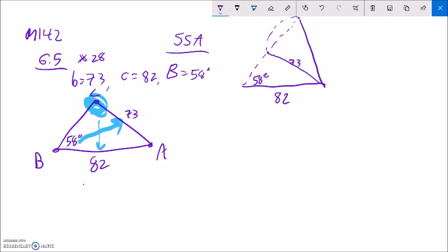I'm going to say sine of C divided by 82 is sine of 58 degrees divided by 73. Multiply both sides by 82 to get that out of the denominator. Sine of C is 82 sine of 58 degrees divided by 73. So in order to get C, I'm going to use arc sine.